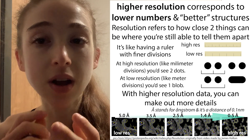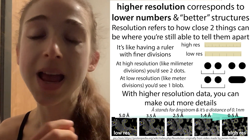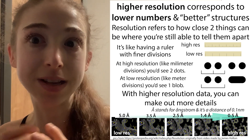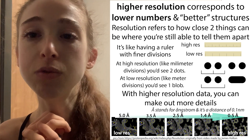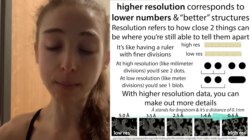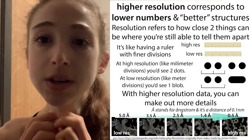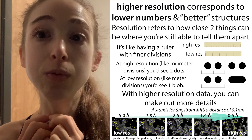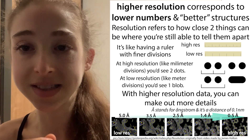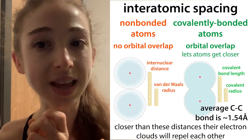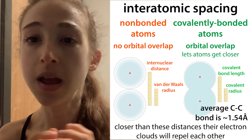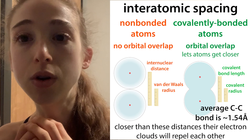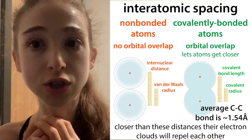In molecules, we're talking about really tiny distances. Typically, we're talking in terms of angstroms. One angstrom is 0.1 nanometers. A nanometer is a billionth of a meter, so we're talking about a billionth of a millimeter — really, really tiny distances.